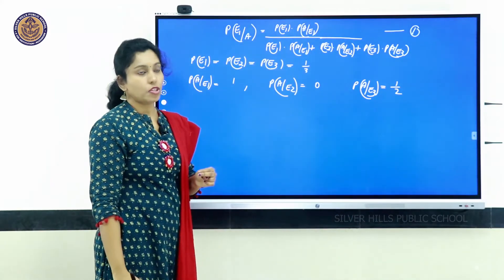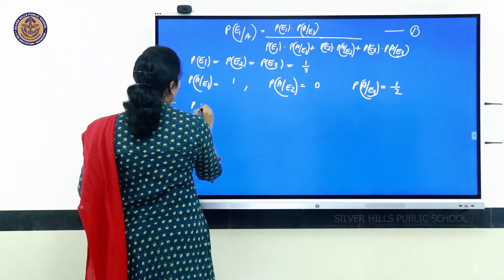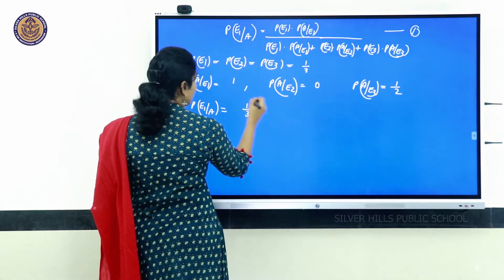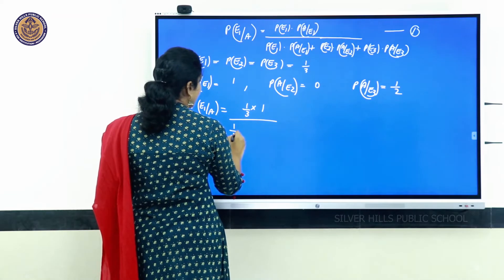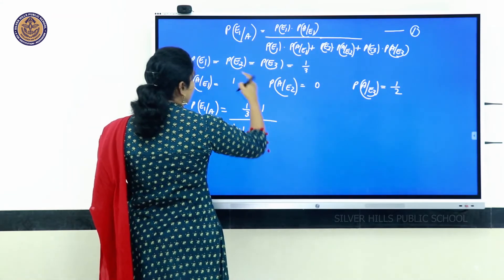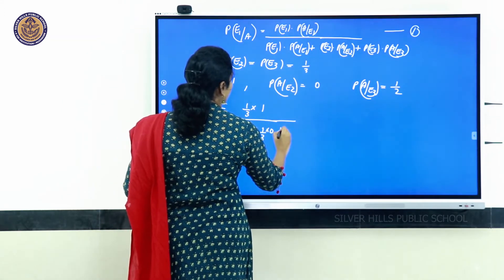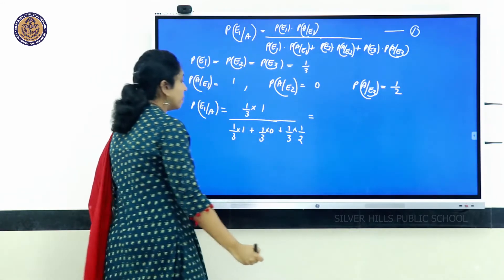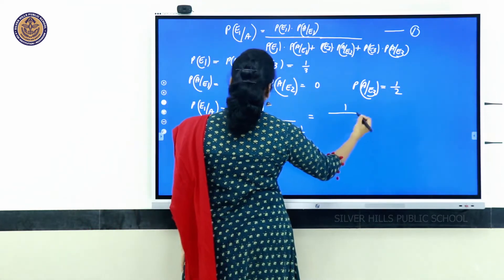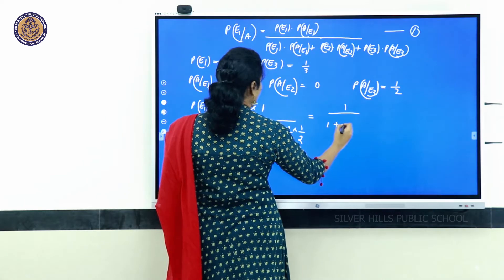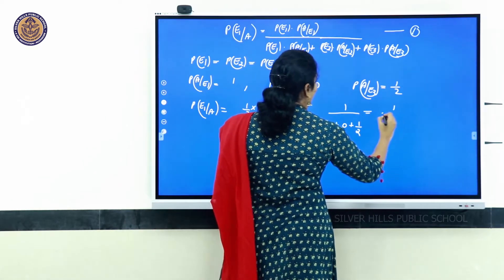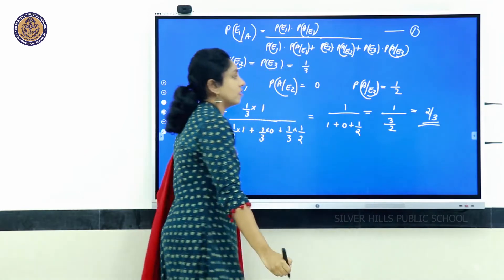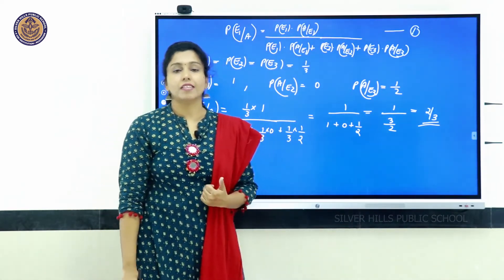Substituting: P(E1|A) = (1/3 × 1) / [(1/3 × 1) + (1/3 × 0) + (1/3 × 1/2)]. Cancelling 1/3: = 1 / (1 + 0 + 1/2) = 1 / (3/2) = 2/3. The required probability is 2/3.